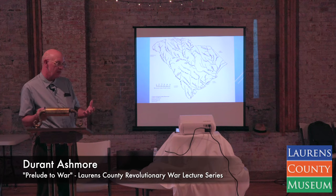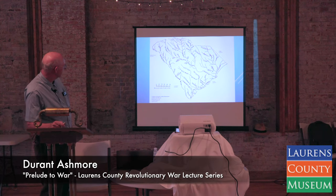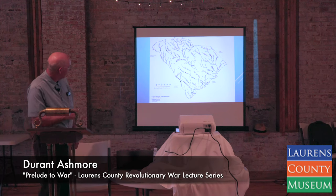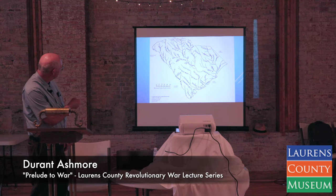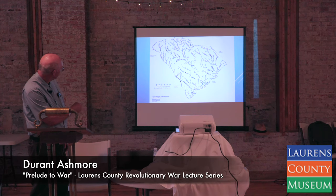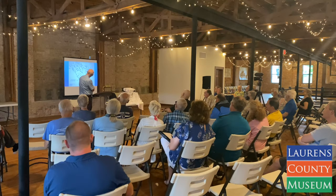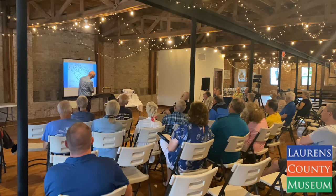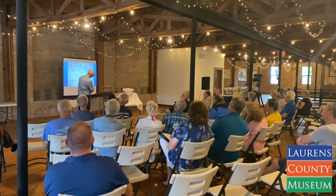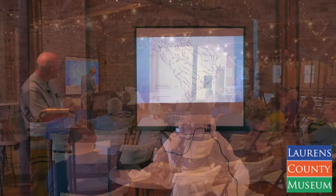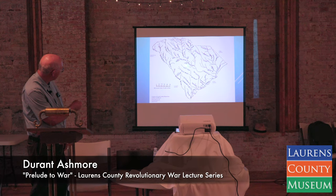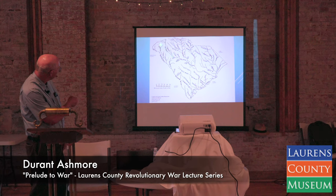One thing I want you to notice in particular about these river systems — this is the watershed for the Santee River, and this is the watershed for the Savannah River. There is a ridge right through South Carolina, which is currently Interstate 26, that goes all the way down to Charleston and eventually becomes King Street in Charleston. This ridge is the Cherokee Path, and it was a very important commercial byway in South Carolina.